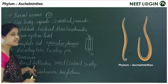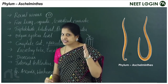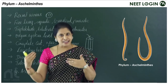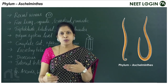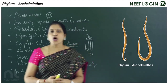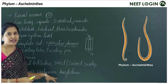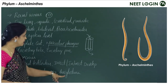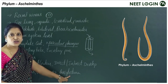Aschelminthes show internal fertilization and development may be direct or indirect — some are viviparous and give birth to young ones directly. Examples include Ascaris (common roundworm), Wuchereria (filarial worm), and Ancylostoma (hookworm). Key points: complete gut, pseudocoelomate, tube-within-a-tube organization, and sexual dimorphism with clearly demarcated males and females.